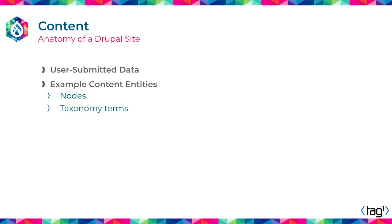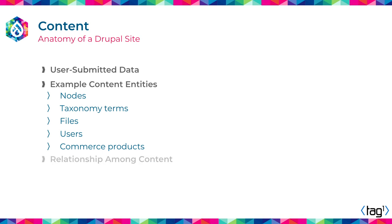We have taxonomy terms for categorization of content. We have files — with an asterisk because we'll talk about them in a moment. We have users. We have commerce products if you have an e-commerce store, and there are many more. One important thing about content is that content entities don't come in isolation — they are related to each other. Those relationships can be either explicit or implicit.